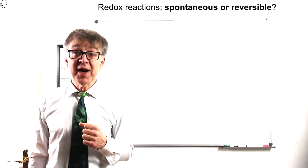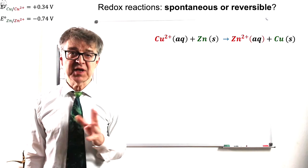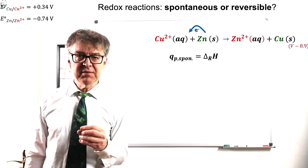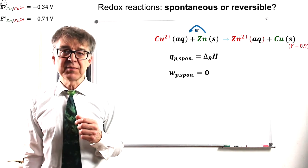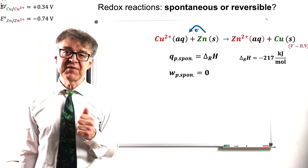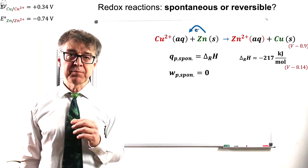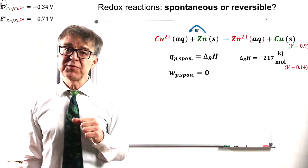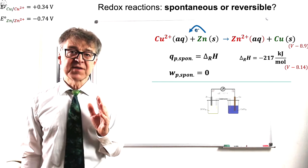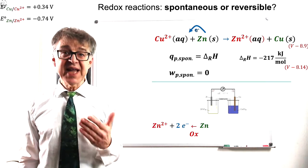We may as well combine zinc and copper ions without a galvanic cell. With this reaction taking place spontaneously, the heat release corresponds to the reaction enthalpy delta H, in this case negative 270 kJ. As with any spontaneous reaction, no useful work is involved.